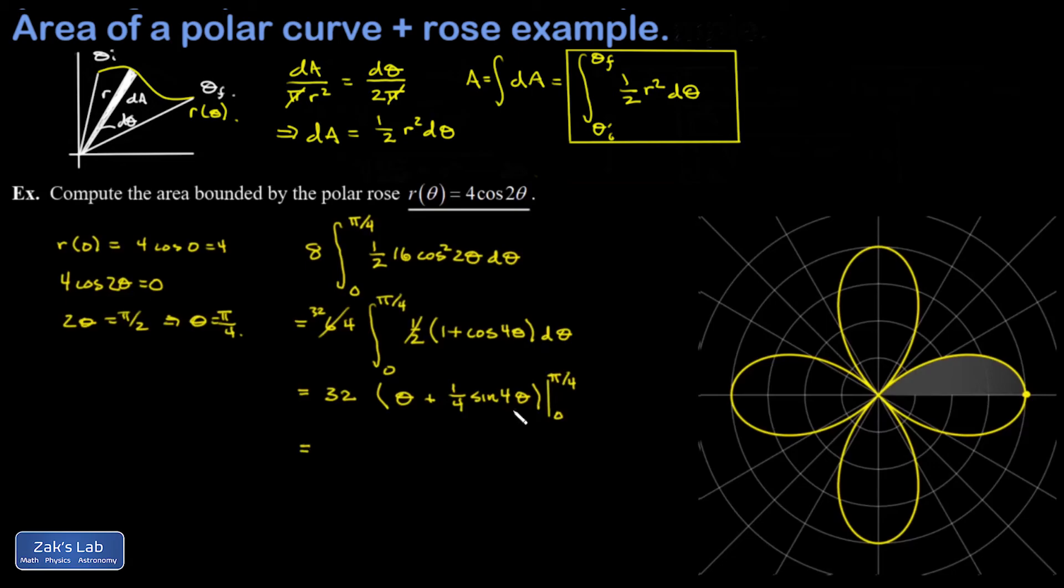If I examine that sin(4θ) term, the upper limit is going to give me the sine of π, and that's zero. The lower limit is going to give me the sine of zero, and that's also zero, so that whole term is gone. All that's left is to sub in the upper limit for theta, and I get 32 times π/4, which simplifies to 8π. And we're done.